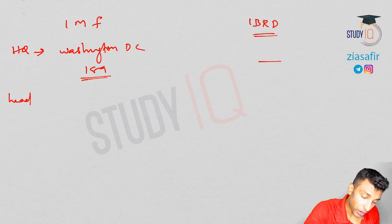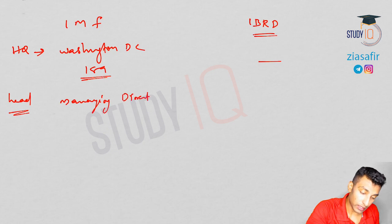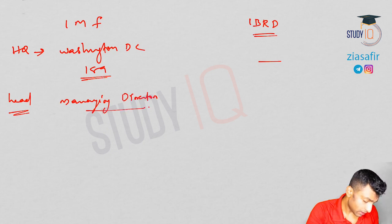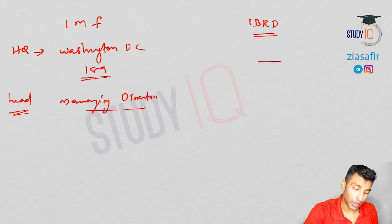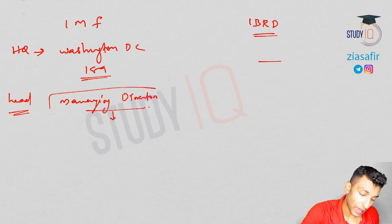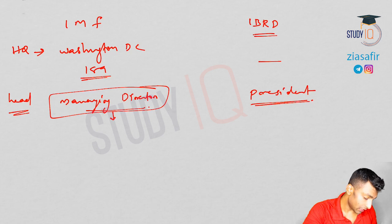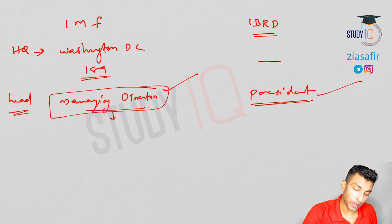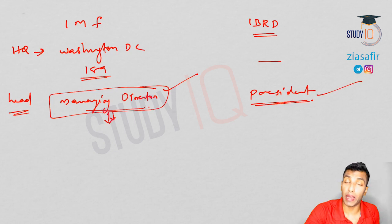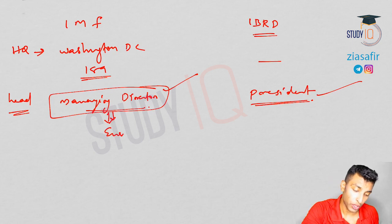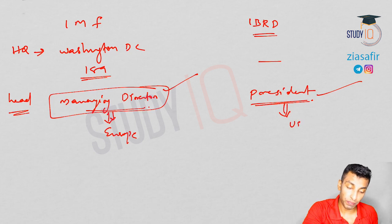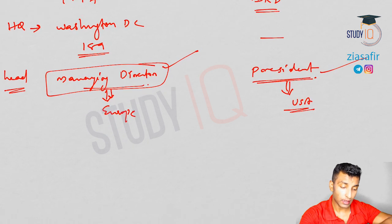The head of IMF is called Managing Director. The current Managing Director is Kristalina Georgieva. In contrast, the head of World Bank is called President — currently David Malpass. As per convention, the Managing Director of IMF is always from Europe, and the President of the World Bank is always from the USA.